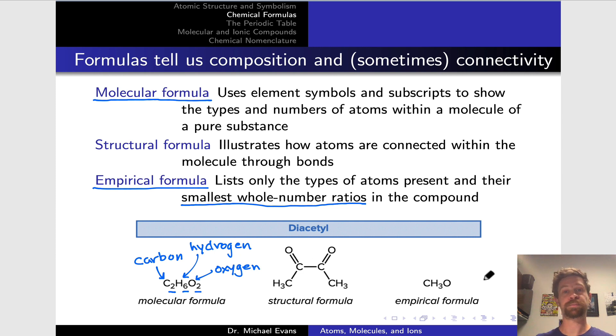The reason the word empirical shows up here is that in the early days of chemistry, before it was possible to elucidate molecular structure, analysis of the elements within a compound and their relative amounts could only tell us the empirical formula. For example, diacetyl would only be revealed as CH3O. There was no way to understand that on the molecular level, it has two carbons, six hydrogens, and two oxygens.